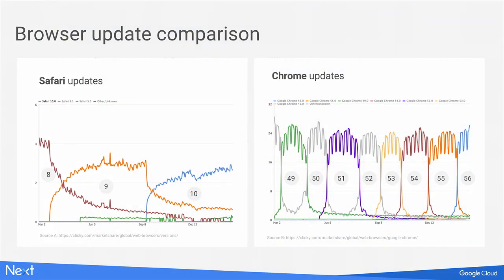Chrome updates are a critical piece of our security story — the browser has to be updated to be secure. Comparing update speeds for Safari and Chrome using data from Clicky.com, a web analytics company, the graph shows old versions taking months to get updated and die off. Safari 8 from 2014 is still kicking along, which is consistent with browsers that have annual release cycles and no automatic update features.